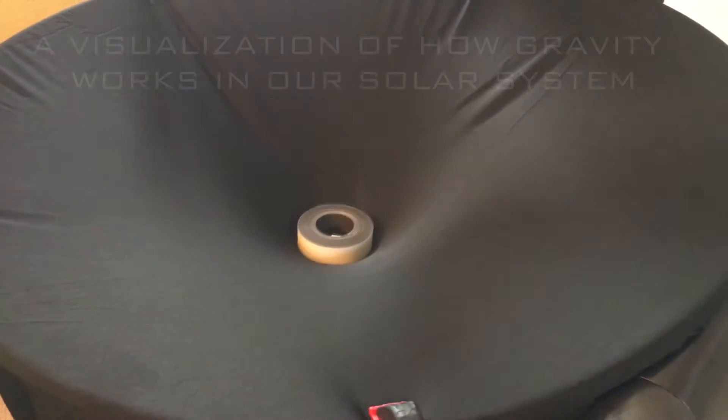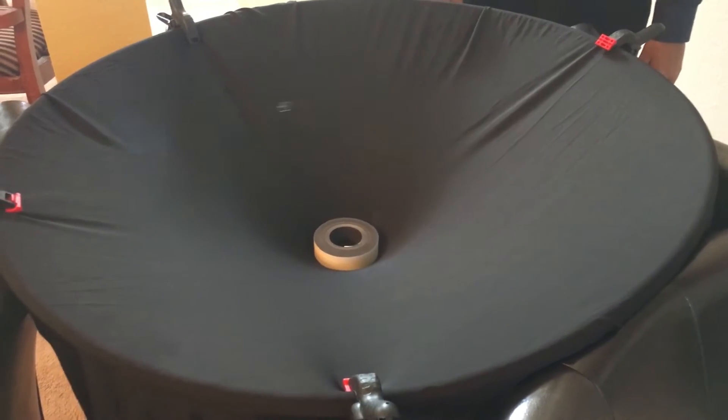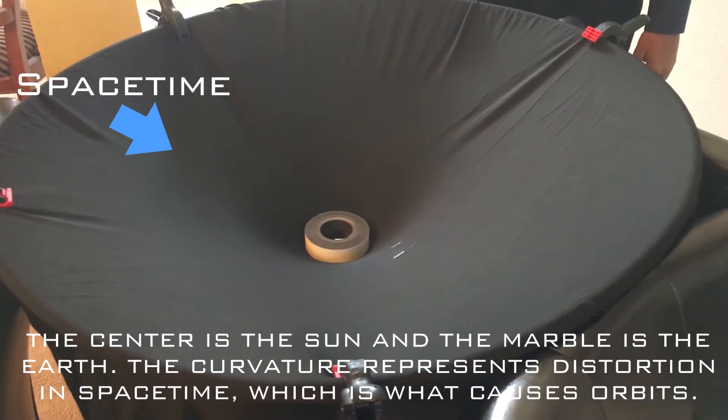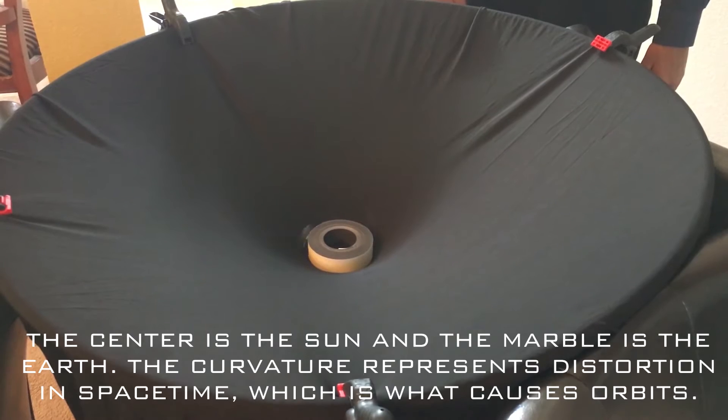General relativity, the most accepted theory of gravity, unifies space and time by interweaving them into a single continuum known as spacetime, and states that the mass of an object causes spacetime to curve or become warped. This curvature is what creates the effect of gravity.